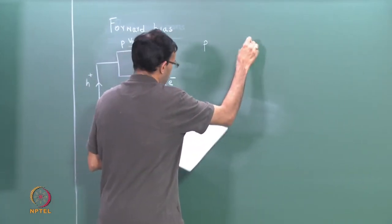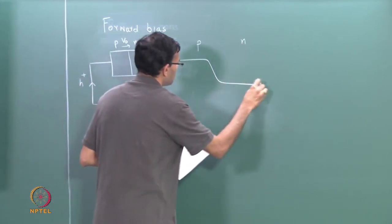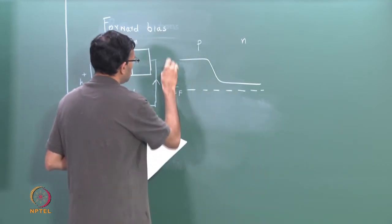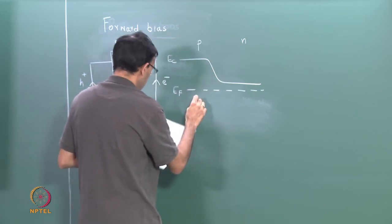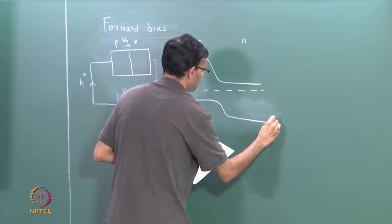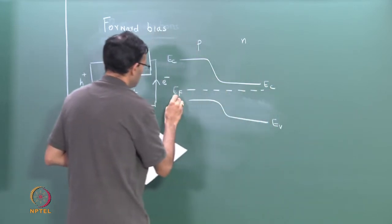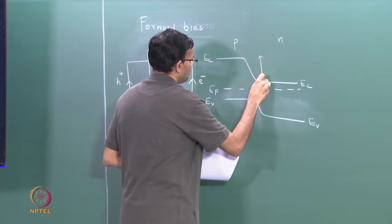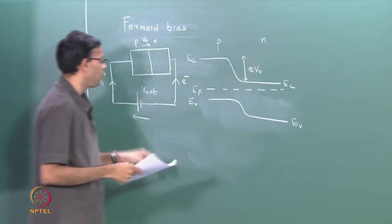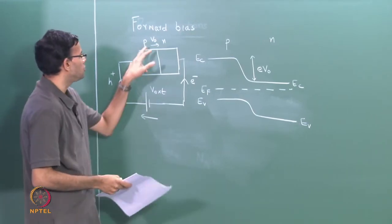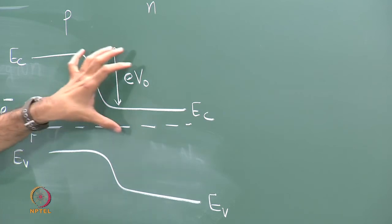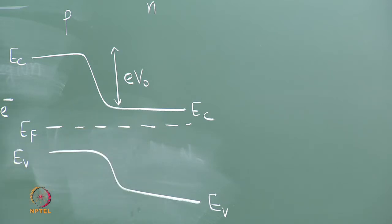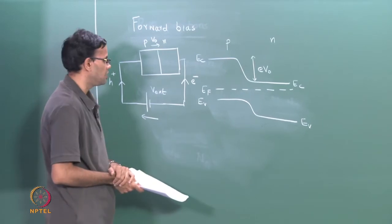Let me draw the energy band diagram first in equilibrium. In equilibrium the Fermi levels line up, and the barrier is nothing but eV naught. I now apply an external potential that opposes V naught. The equivalent of saying this is that this barrier is lowered. What we can say is that the n-side has shifted up, and it is shifted up depending upon the value of the external potential.